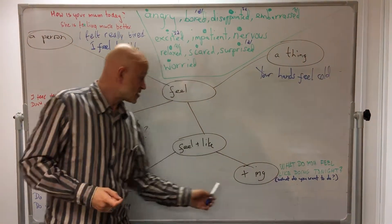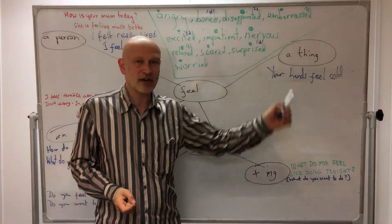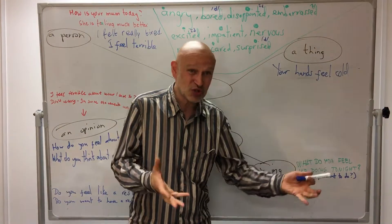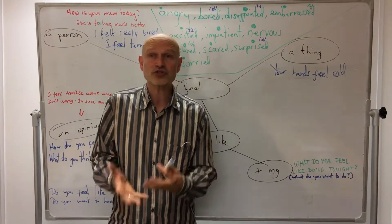And finally we can use 'feel like' with verb-ing. So we say, oh I feel like going out tonight. What do you feel like doing tonight? And that means what do you want to do. What you feel like doing, what do you want to do.